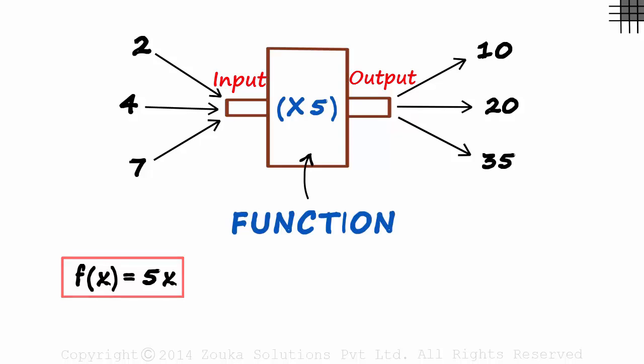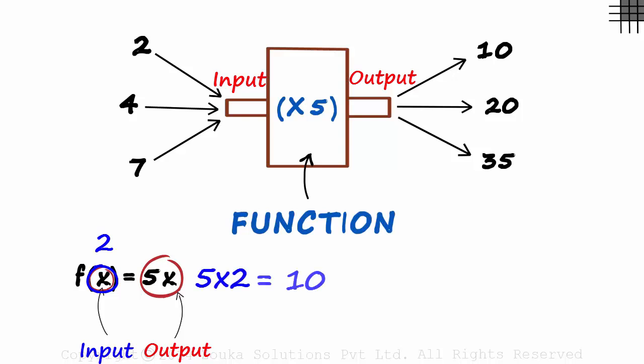What does this tell us? What's written within the brackets is the input to this function. And what we get is the output. If x is 2, then the output will be 5 times 2 which is 10.